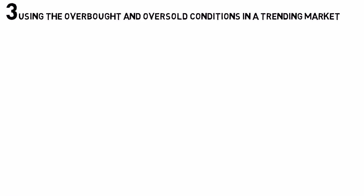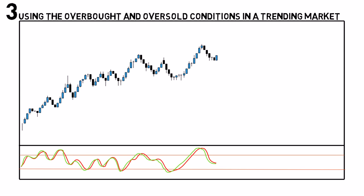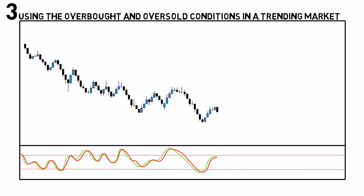Using the overbought and oversold conditions in a trending market: when the market is trending upwards, you wait for a retracement lower and an oversold reading on the stochastic indicator, and you buy when the D line is rising above the 20 level. When the market is trending down, you wait for a retracement higher and an overbought reading, and you sell when the D line is falling below the 80 level.